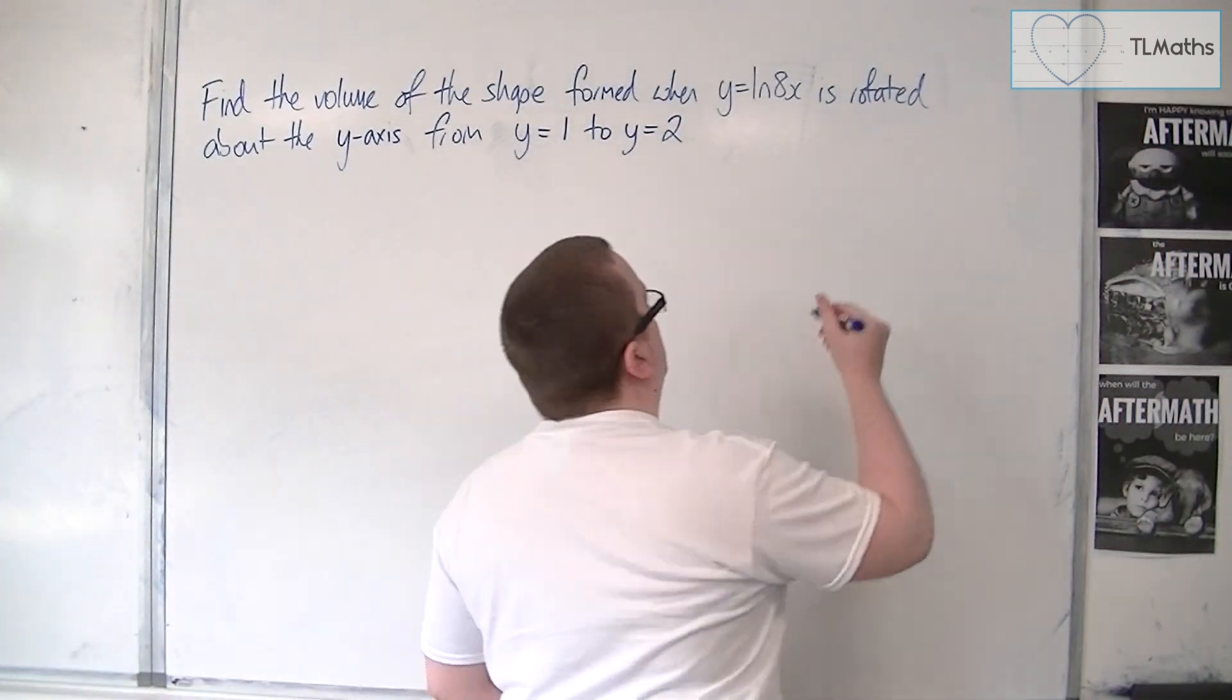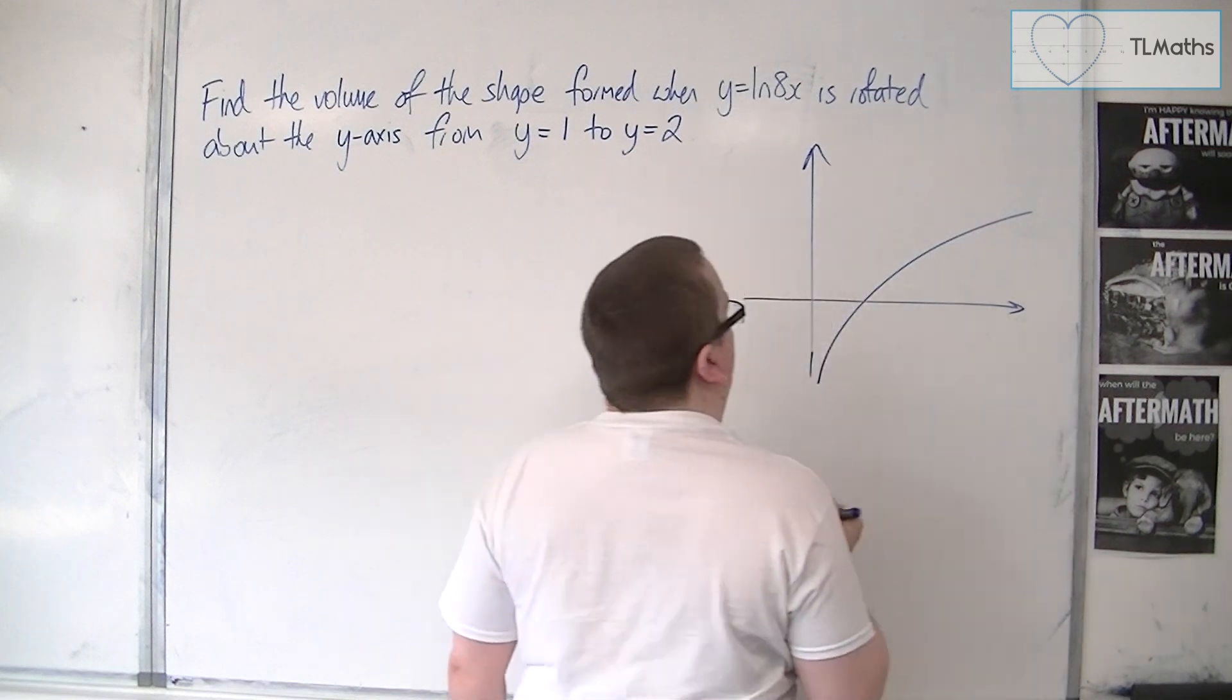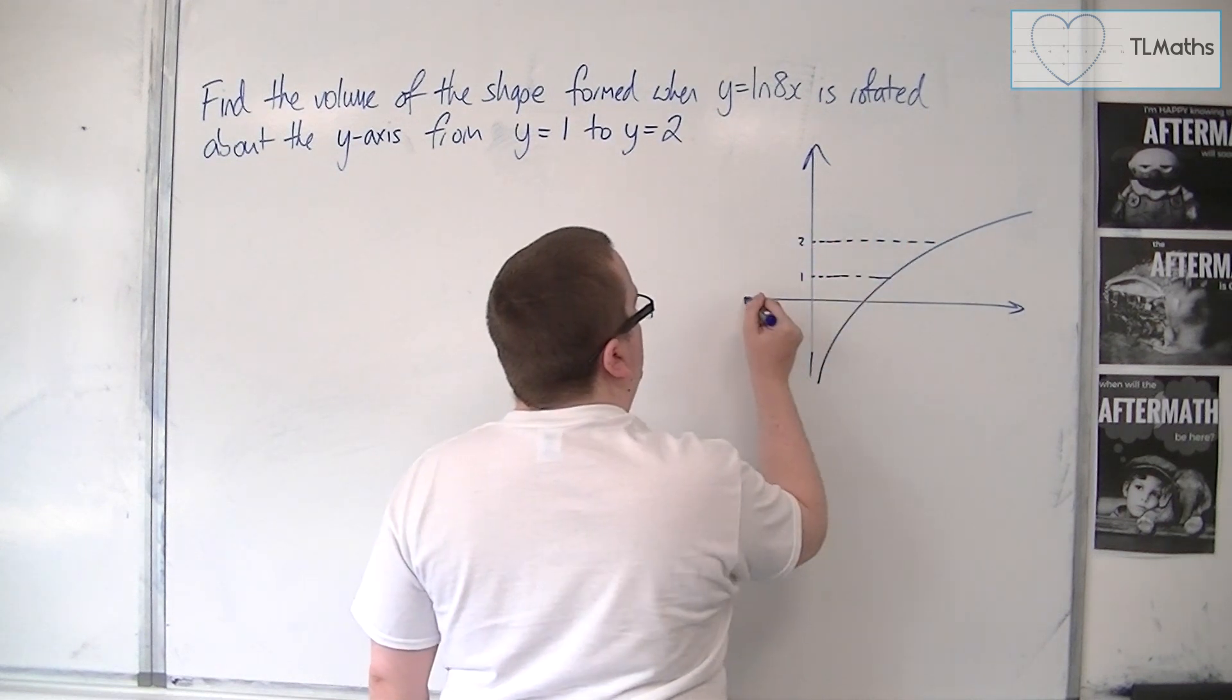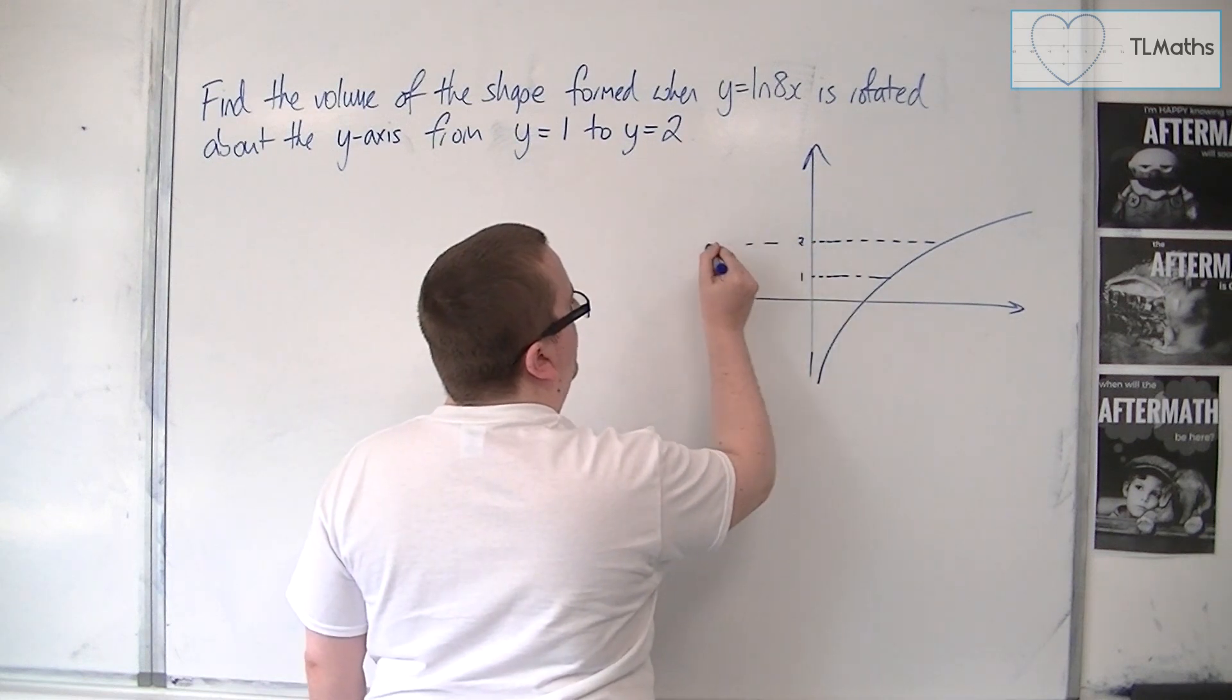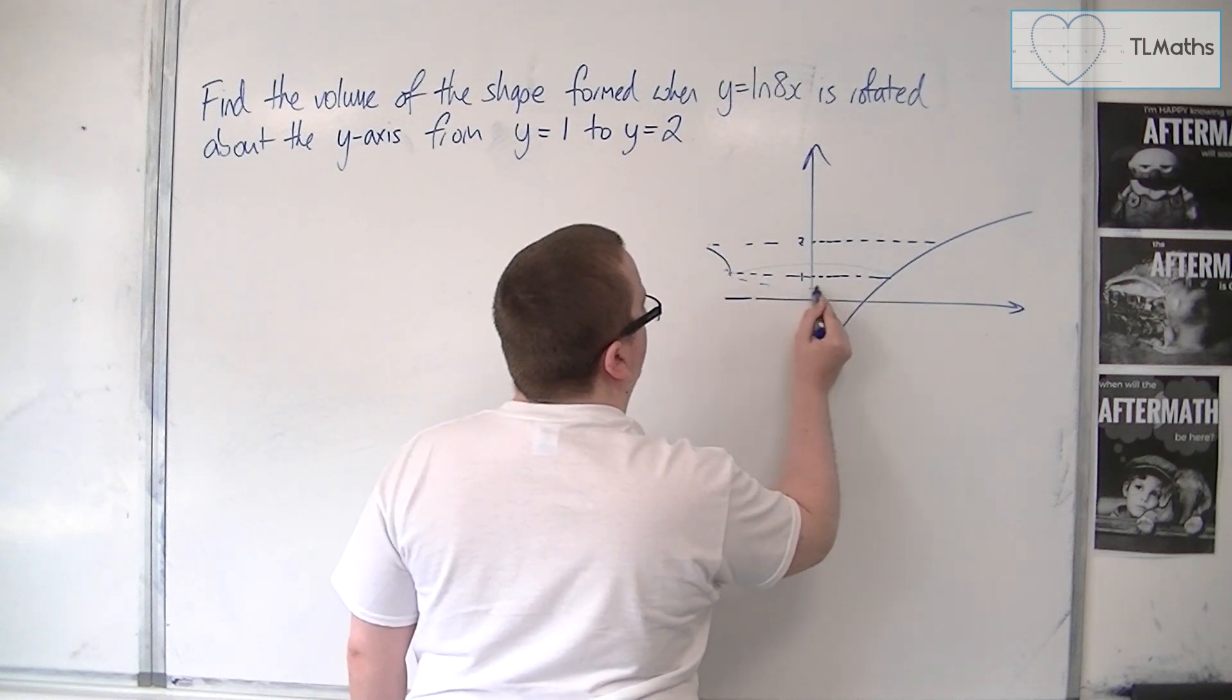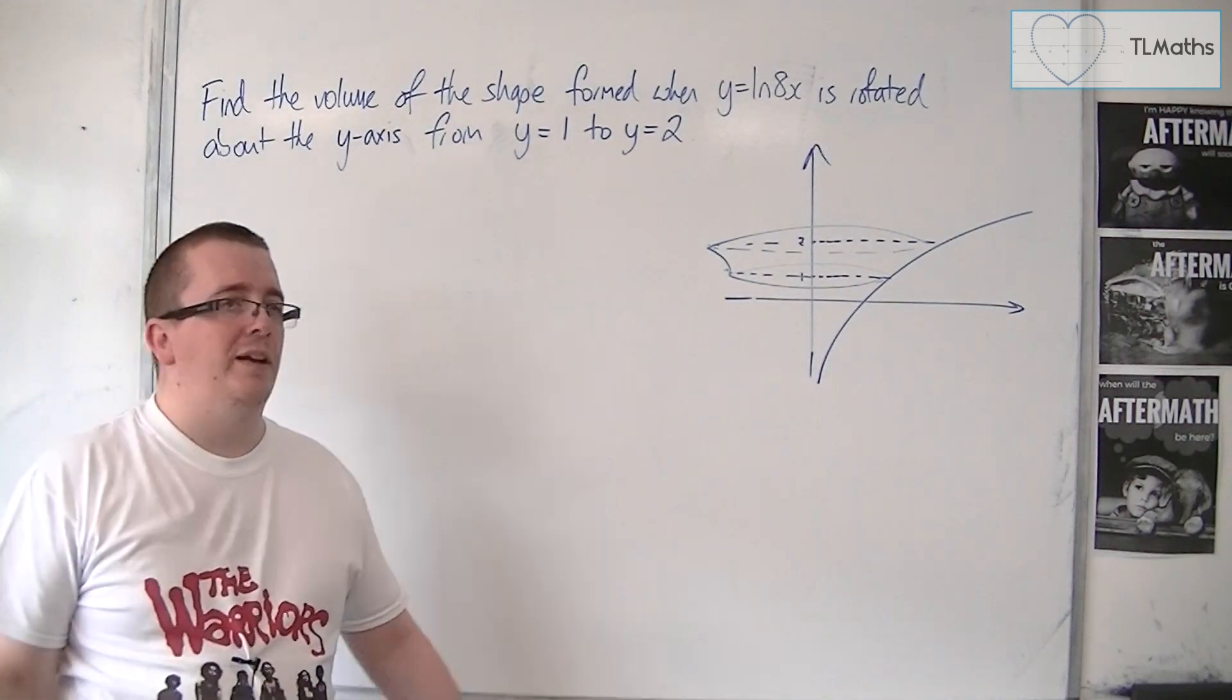So visually, what's happening is that we have the curve y equals log of 8x, looks something like that. And we're rotating it between y equals 1 and y equals 2 about the y-axis. So we're going to have this curve that looks something like this. We're going to have this 3D shape that looks something like that.